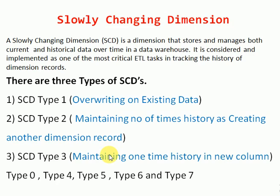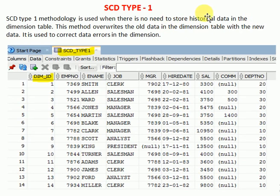Type 3 is mainly used to maintain one-time history alongside the current record. The historical record is kept in an additional column. For example, his current phone number and previous phone number, or current location and previous location. If a person changes locations frequently but you only want to maintain two values — current location and previous location — then you can go for SCD type 3.